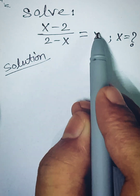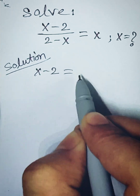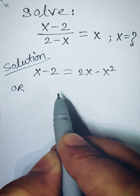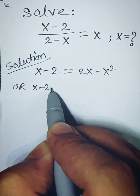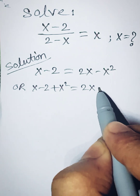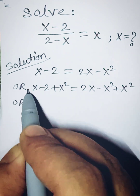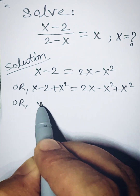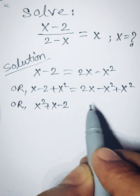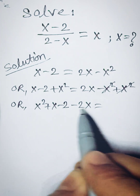Cross multiplying both sides we get x minus 2 is equal to 2x minus x squared. Or x minus 2 plus x squared is equal to 2x minus x squared plus x squared. Or x squared plus x minus 2 minus 2x is equal to 0.